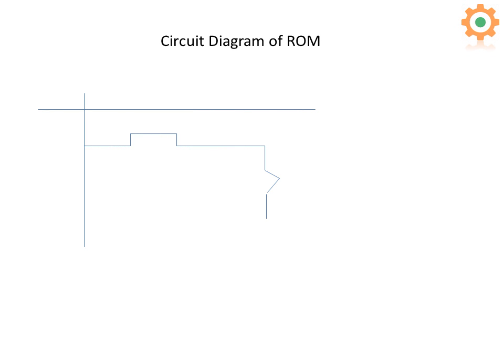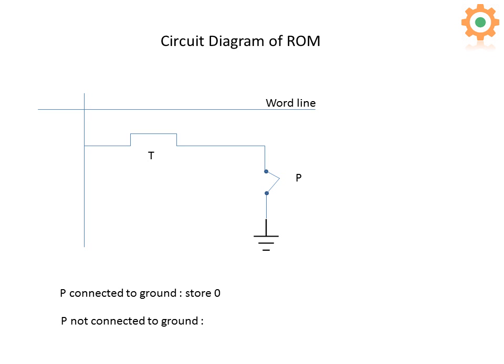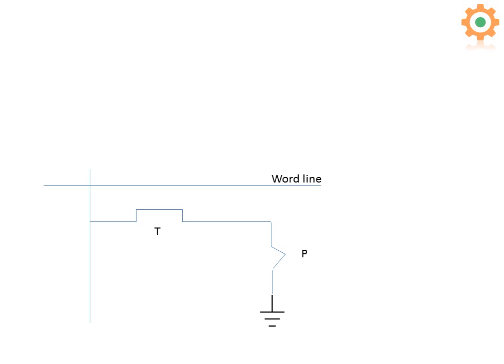Now let's discuss the circuit diagram of ROM and how it is formed. Here P is known as the fuse point. If P is connected to ground then it stores 0, and if P is not connected to ground then it stores 1. Hence by fusing the point P we can store 1 and 0 simultaneously on ROM.